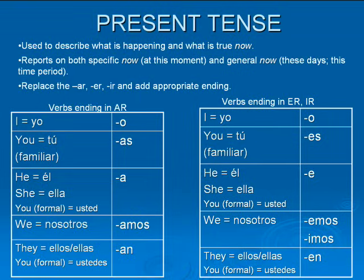On the right are the verb endings for ER and IR. As you can see, they're relatively similar. Also, these are the verb endings for regular verbs. There are going to be irregular verbs in all of these tenses.